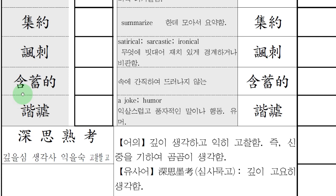그 다음에 해학. 해학이 뭘까? 익살스럽고 풍자적인 말이나 행동. 유머. 여기도 바로 풍자라는 말이 또 나오잖아. 계속 이 우리말이 같은 단어를 계속 쓰긴 하지만 그 말의 핵심이 뭔지 모르면 풀리질 않는 거죠. 해학이라는 것은 유머, 위트, 우스갯소리. 그런 것들이 이제 해학적이다. 조크. 거기에 조크라는 말도 있고 유머라는 단어가 써있지?